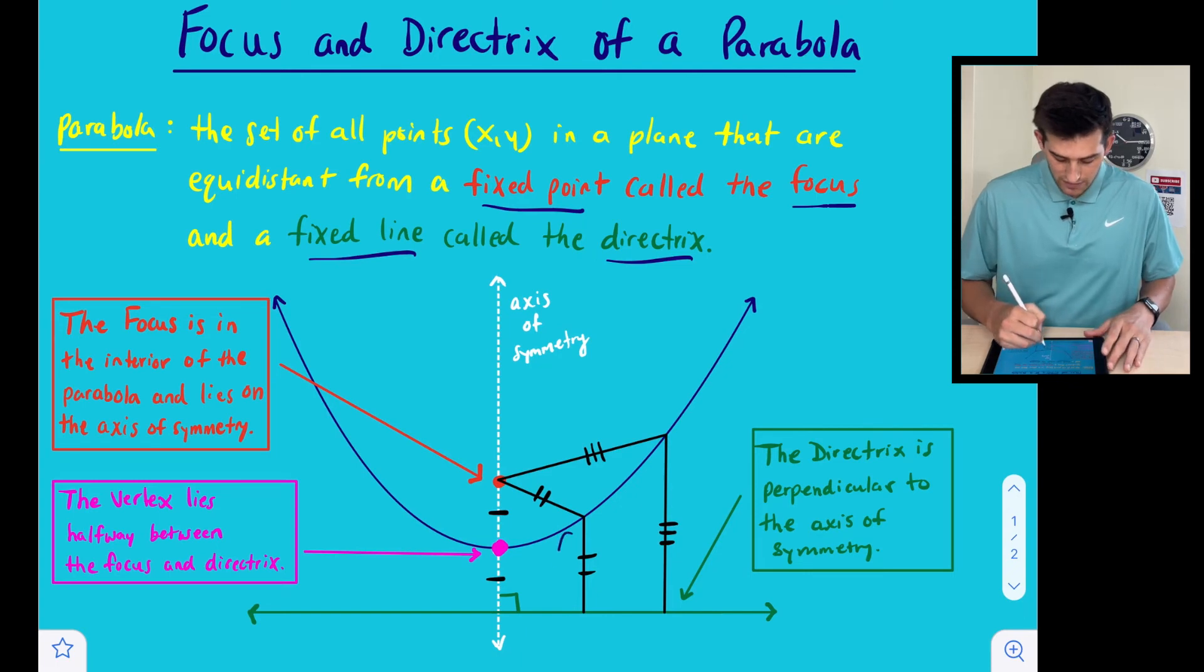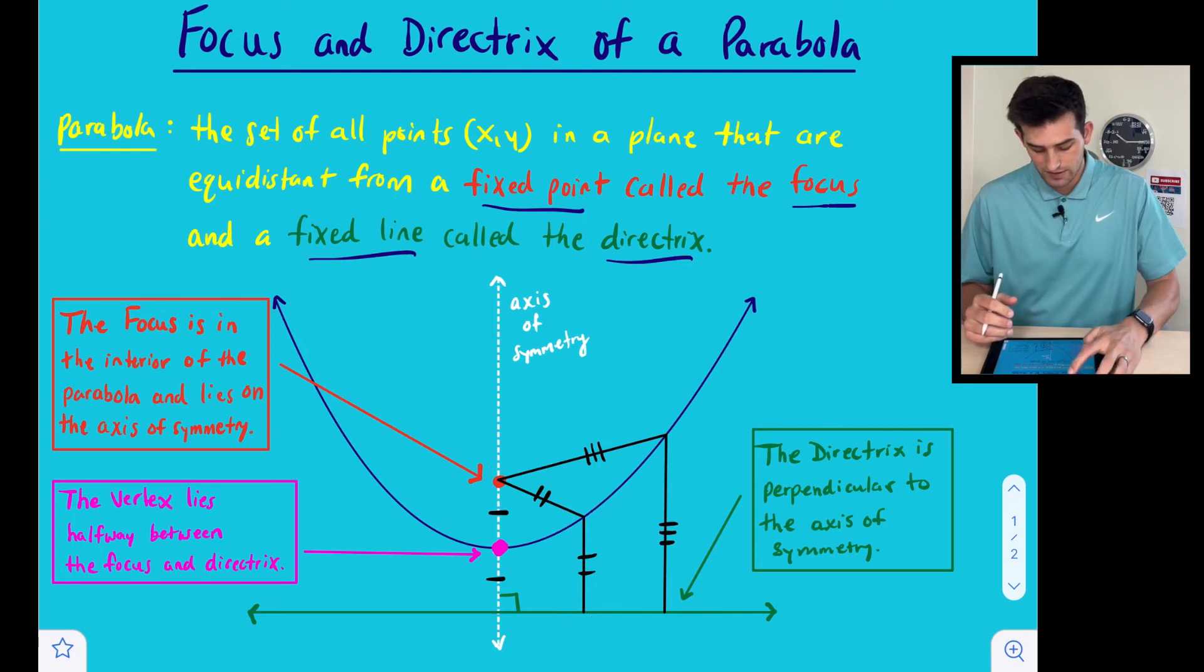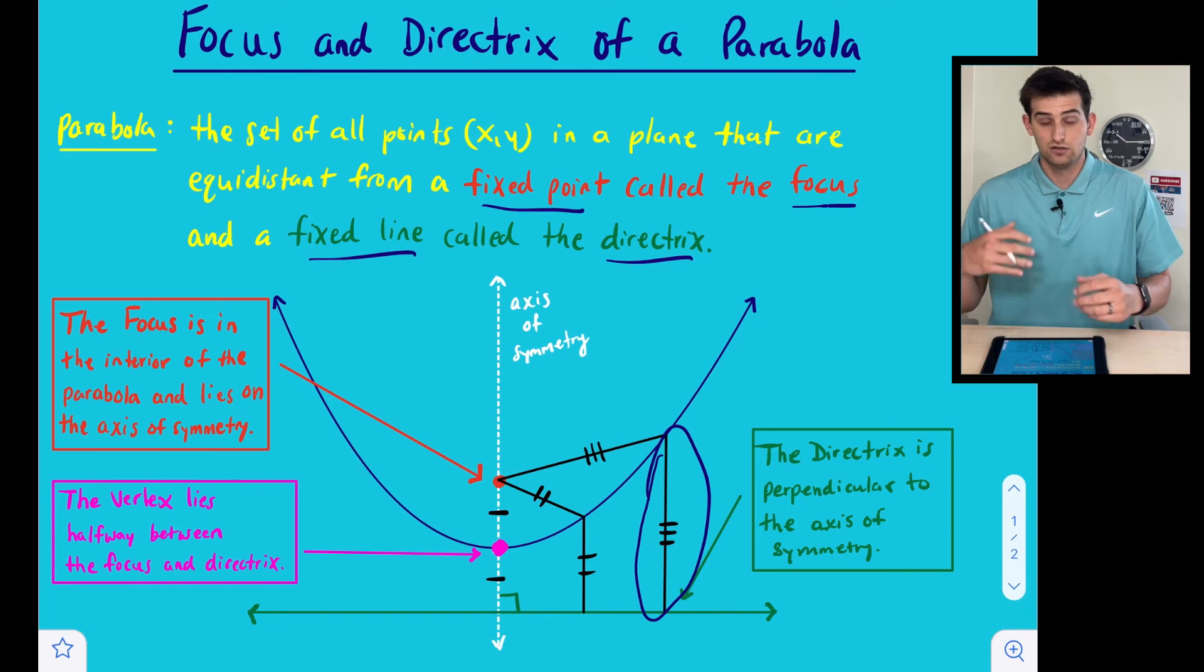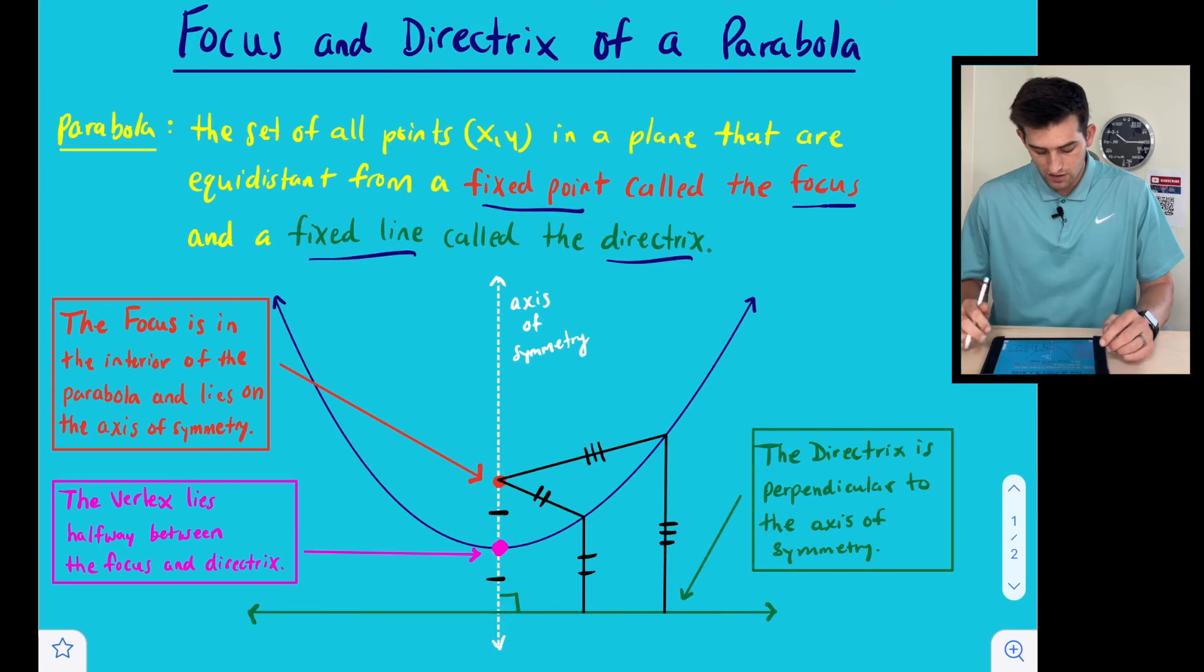So notice here we have our line drawn from the parabola to the directrix. That line needs to be the same distance as the parabola to the focus. And so that's what those two tick marks there represent, the same distance. Also, we have another example here, a longer distance because our parabola is increasing on the right here. And then we have this distance from the focus to the parabola as well, represented by three tick marks because those two segments are equal.